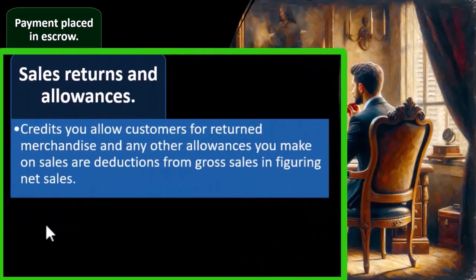Sales returns and allowances are credits you allow customers for returned merchandise and any other allowances you make on sales. These are deductions from gross sales when figuring net sales.